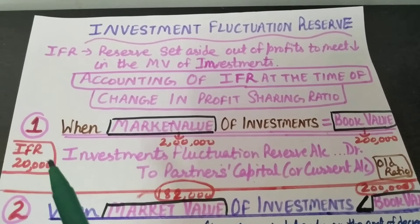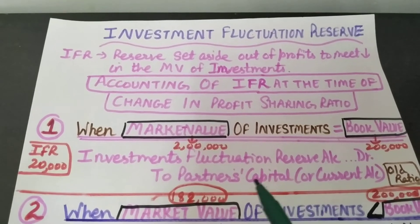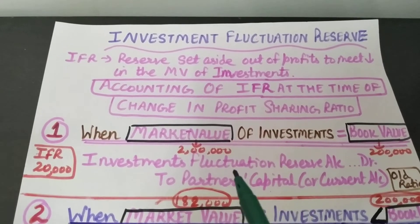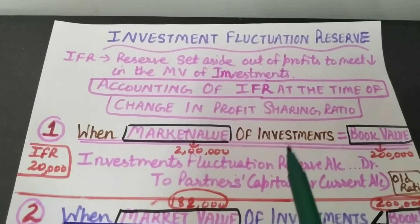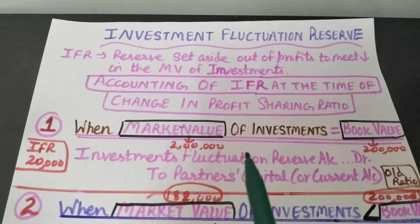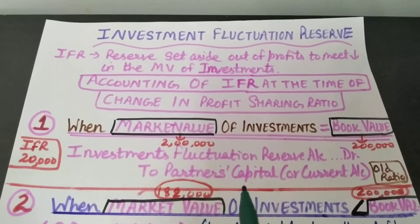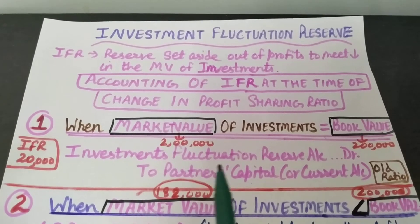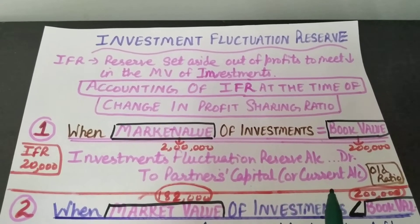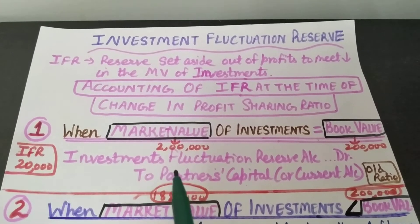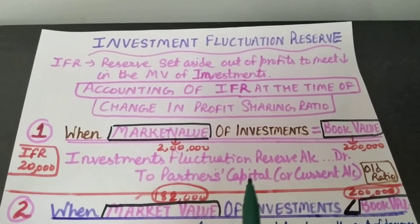In the first situation, market value of investments is equal to book value — assume book value is 2 lakh and market value is also 2 lakh. Assume IFR is 20,000. When market value and book value are the same, the entire IFR amount is transferred to partners' capital accounts in their old profit sharing ratio, because the reserve was created out of profits before the change. Entry: Investment Fluctuation Reserve Account debit to Partners' Capital or Current Accounts — 10,000 each if they are equal partners.